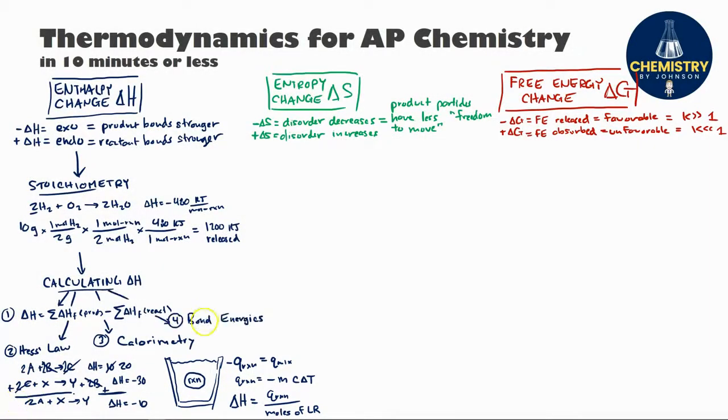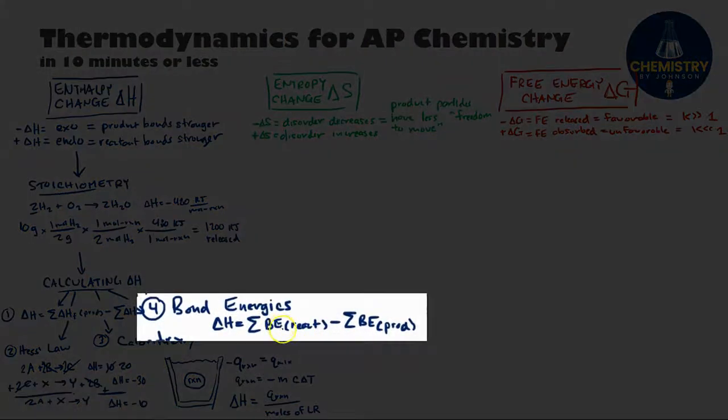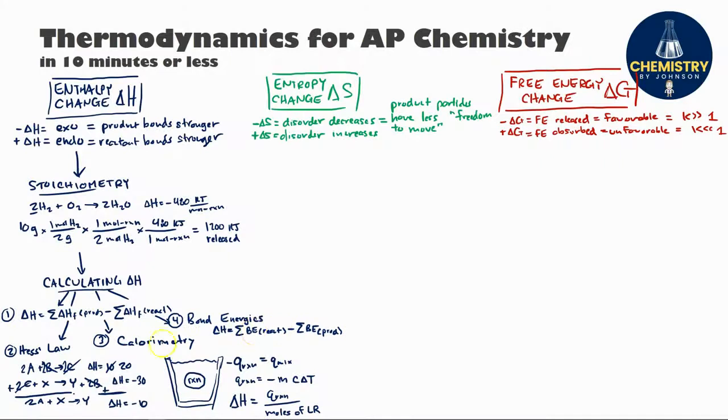We can also use bond energies or bond dissociation energies. And there's a couple different ways to go about it, but I'd recommend a simple equation where you add up all the bond energies of the reactants and subtract out the bond energies of the products. This actually is not given on the AP equation sheet, but I recommend using it because it makes the problem very simple.